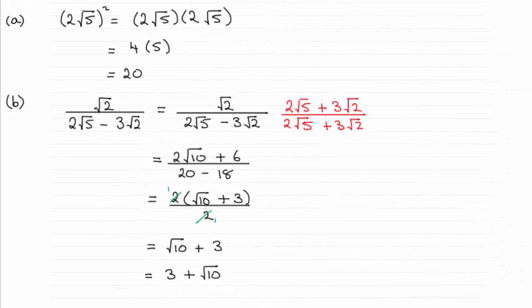Hi there, welcome to the first question then on this paper. What we had to do was simplify 2√5 all squared, and simplify √2 over 2√5 minus 3√2, giving it the form a plus √b.